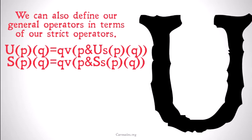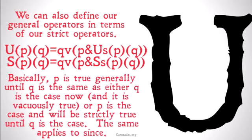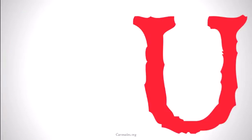We can also define our general operators in terms of our strict operators. Basically, P is true generally until Q is the same as either Q is the case now and it's vacuously true, or P is the case and will be strictly true until Q is the case. The same applies to since, just in the past.